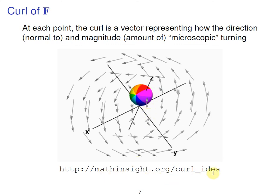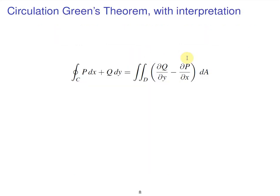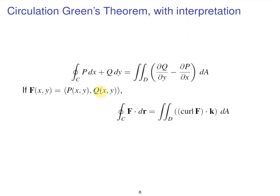Curl is really only naturally understood for three-dimensional vector fields. The idea is: at a particular location (x, y, z), if you could leave a ball there, maybe the ball would spin on its own axis. The magnitude of that spin would be the magnitude of a vector, and the normal vector to the direction of spin would give you the curl. If you put all of these things together, you get one of the standard versions of Green's theorem. If you think of a two-dimensional vector field that's (P, Q), then the left side of that equation — these really say the same thing.